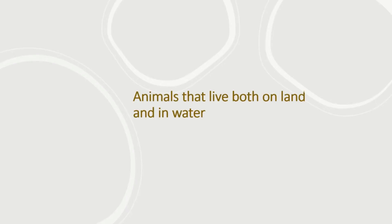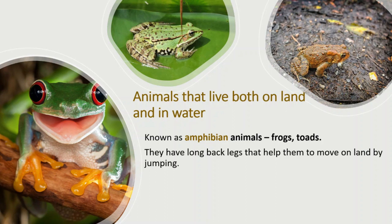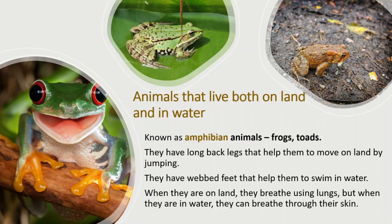Animals that live both on land and in water are called amphibian animals. Frogs and toads are some examples of such animals. They have long back legs that help them to move on land by jumping. They have webbed feet that help them to swim in water. When they are on land, they breathe using lungs. But when they are in water, they can breathe through their skin.